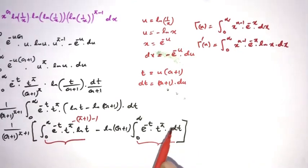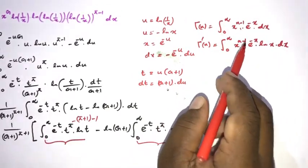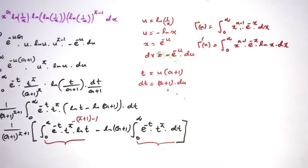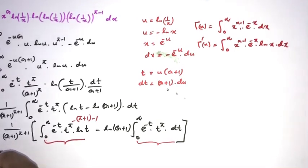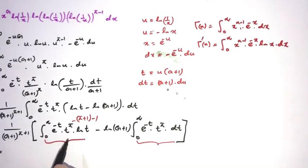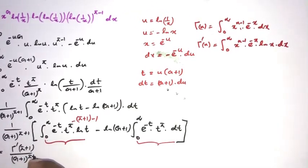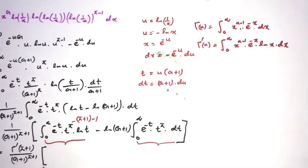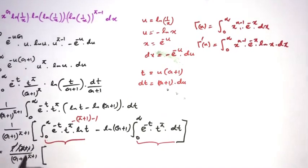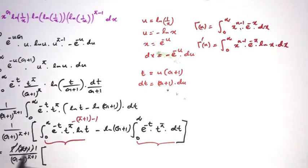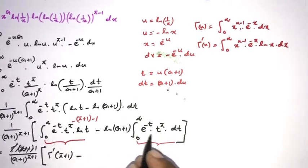The second integral is gamma(pi plus 1). So we can write the result as 1 over (g plus 1) raised to pi plus 1, times gamma-prime(pi plus 1) minus natural log of (g plus 1) times gamma(pi plus 1).